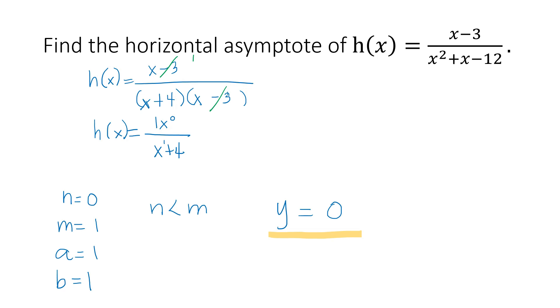Hence, the horizontal asymptote of h(x) is y = 0. The graph of the function will get nearer and nearer to y = 0, but will never intersect this horizontal asymptote.